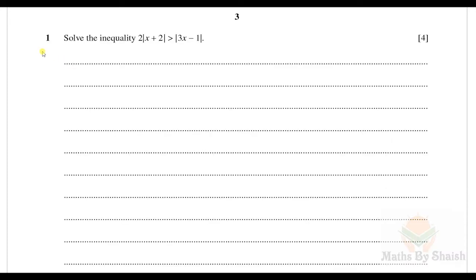Here is question number one: solve the inequality 2 times modulus of (x+2) greater than modulus of (3x−1). As we have discussed in previous videos, whenever we have the modulus on both sides we should square both sides — that is going to be the best way to solve for the values of x.